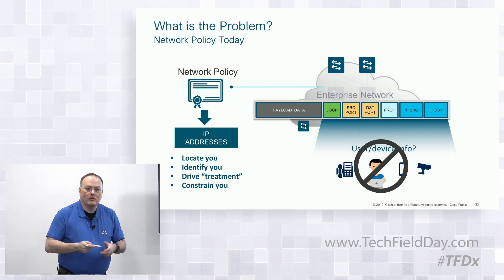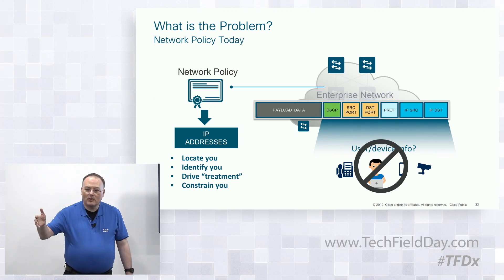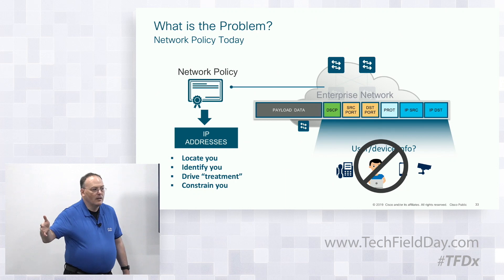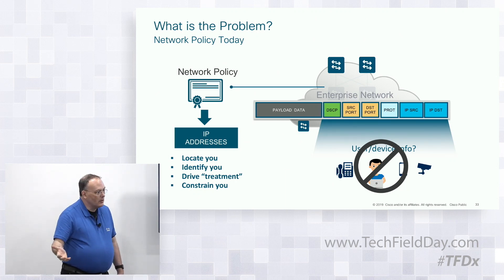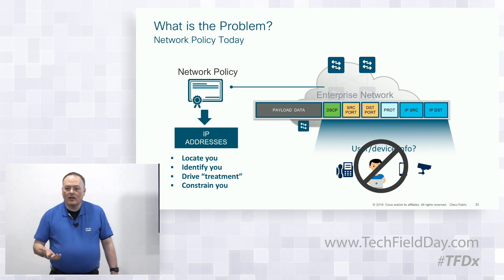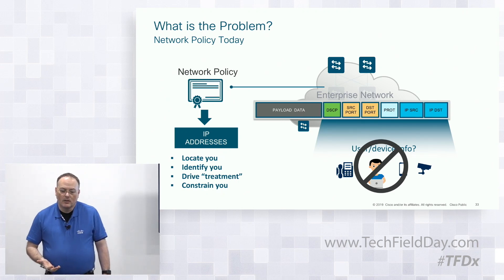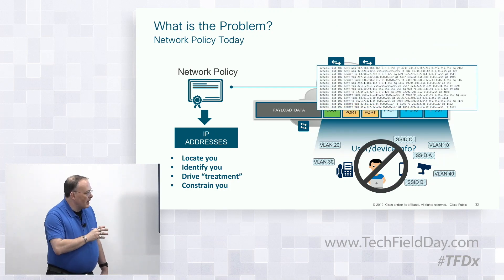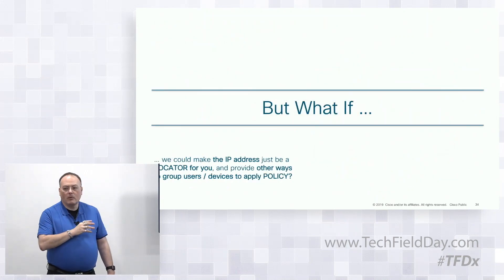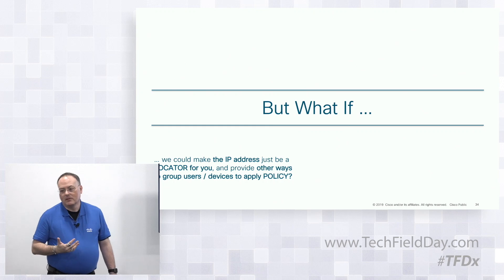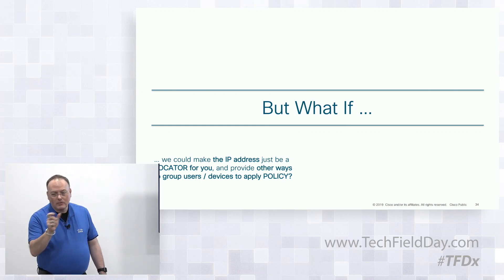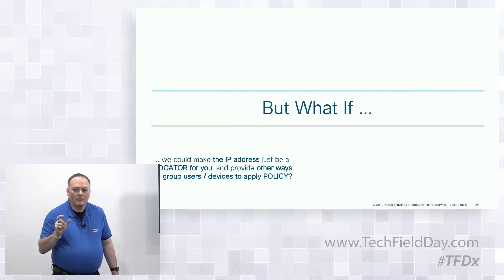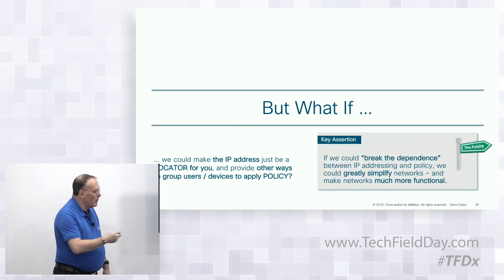If someone asks you to extend a subnet end-to-end across campus for a new application requiring layer 2 connectivity, most times people say no — because of layer 2 loops, spanning tree issues, broadcast storms, and the risk to the entire network. This drives a lot of complexity. The question is: what if we could change the game? What if we could make the IP address simply a way to locate you in the network and decouple it from policy? That's effectively what we do with SD Access.